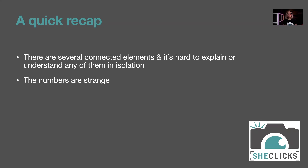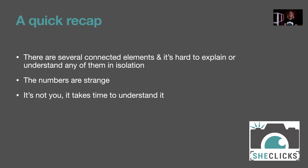The numbers for shutter speed are a bit more understandable because we're talking about fractions and whole numbers — they mathematically make sense. With aperture there's a weird equation involved and the numbers don't necessarily make sense when you're first starting out. Don't worry if you don't understand it first time around — it's not you. Everybody is like this; nobody is born with innate understanding of photography and exposure.